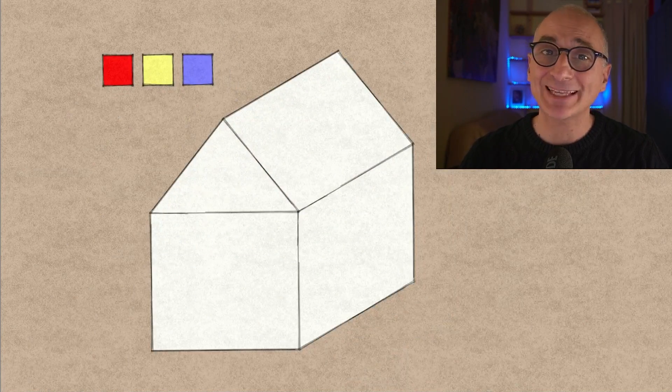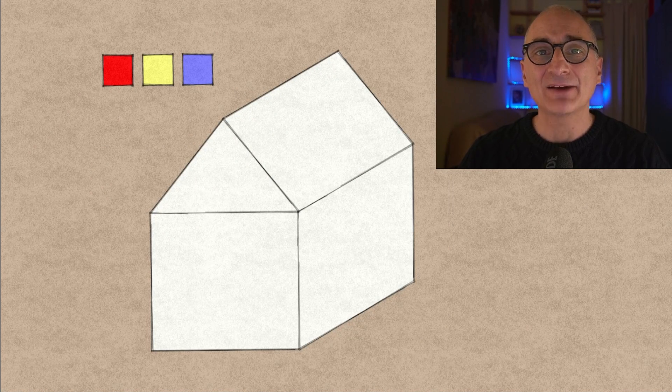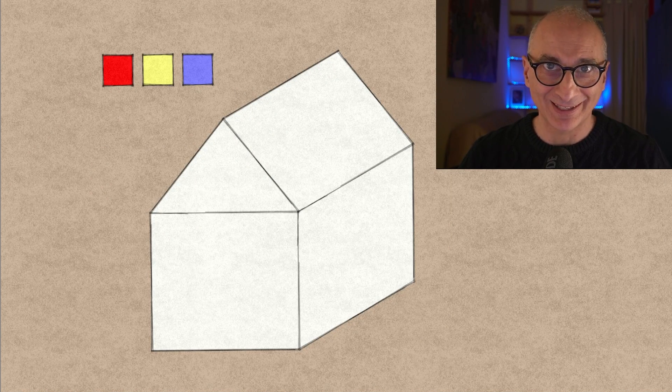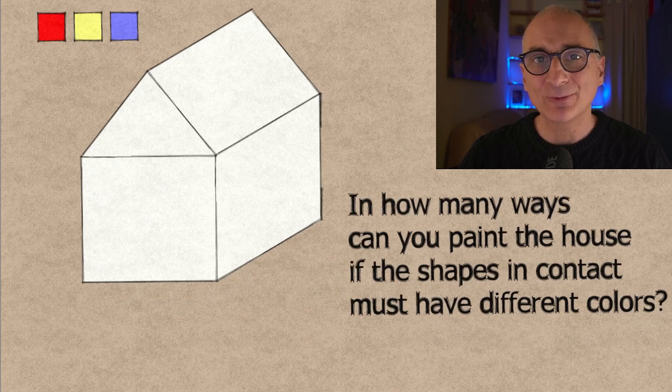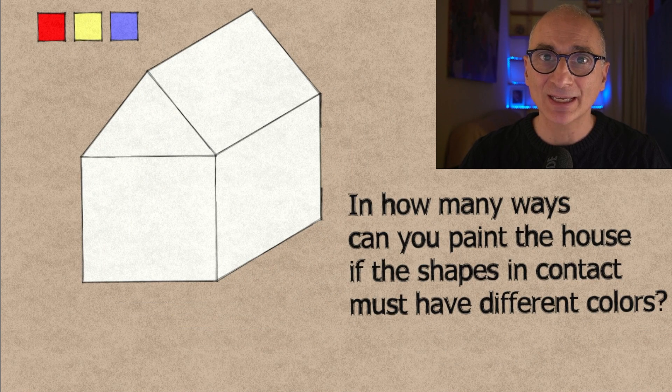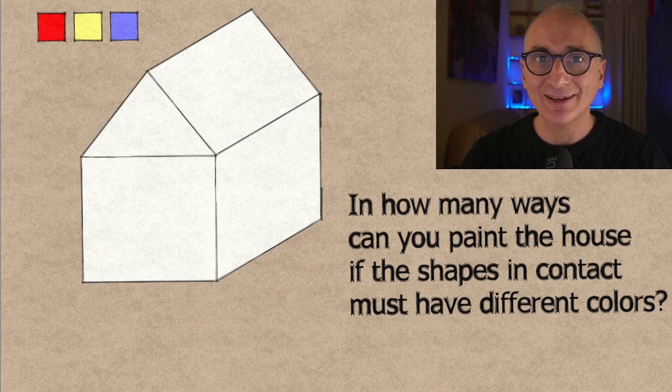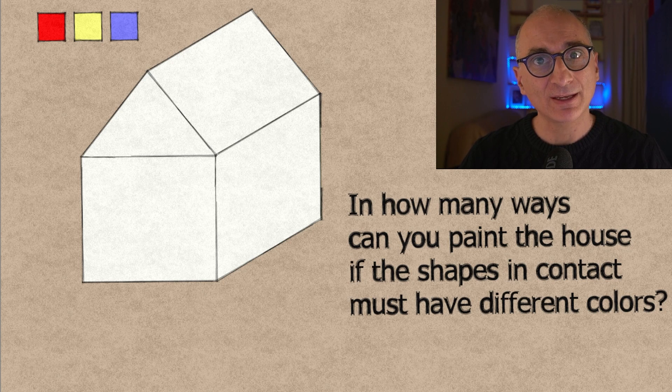So here's a nice problem about colors. You have the flat drawing of a house and you have three colors at your disposal. And the question is in how many ways can you paint the house if shapes that are in contact need to have different colors?